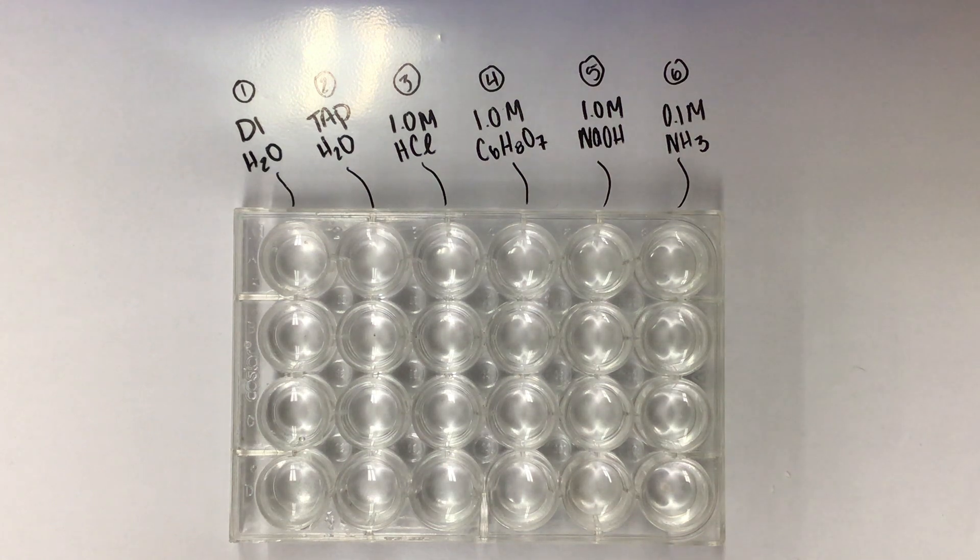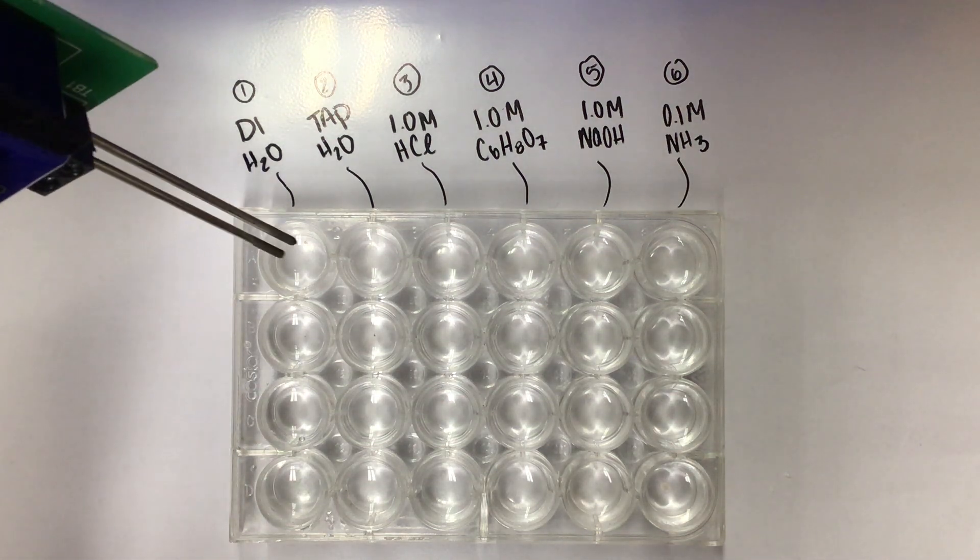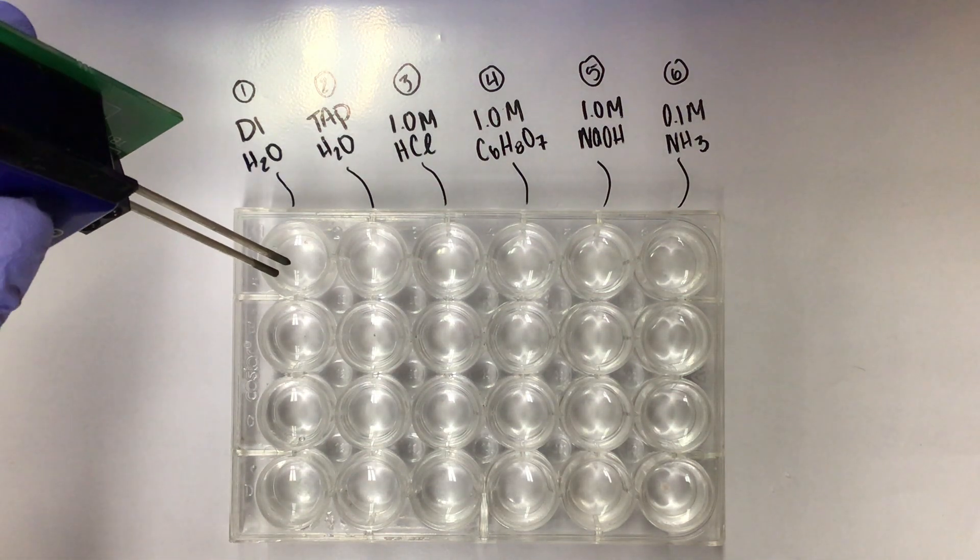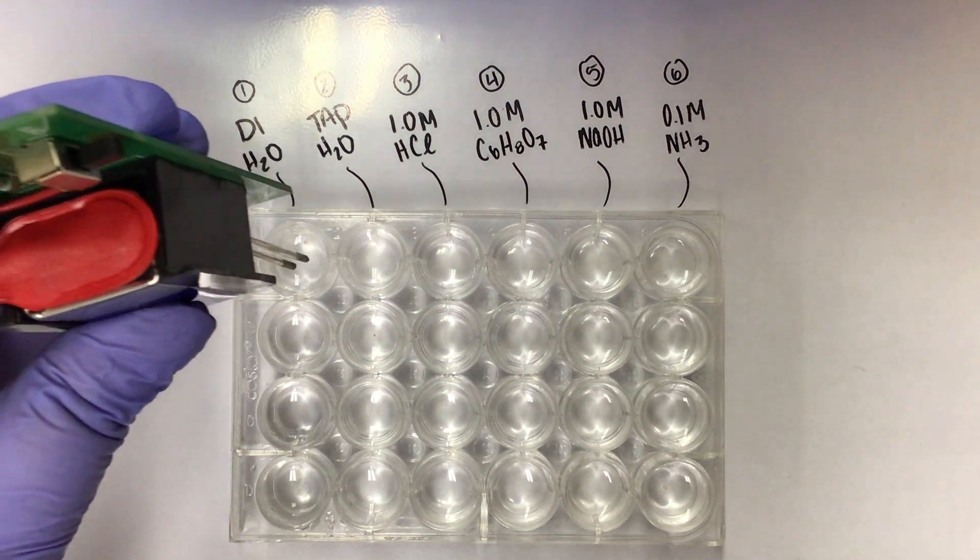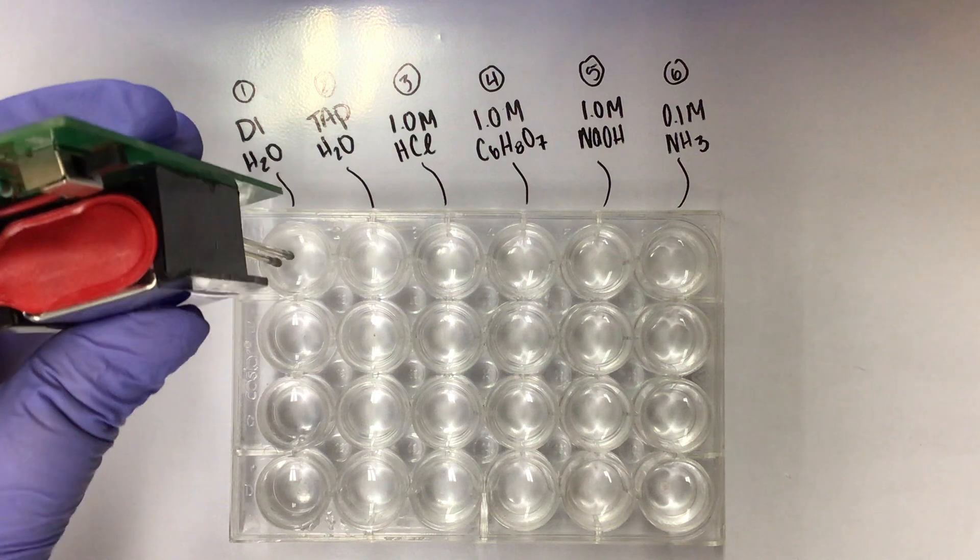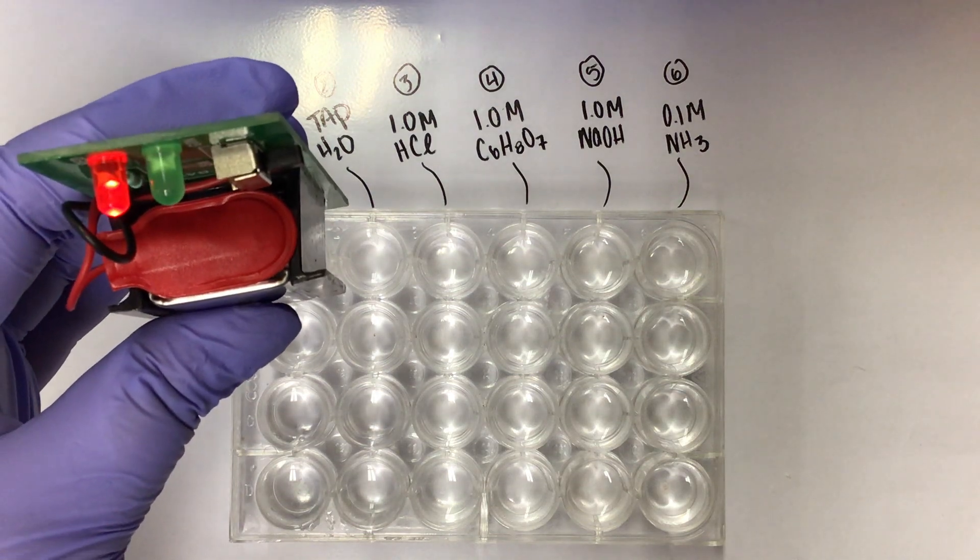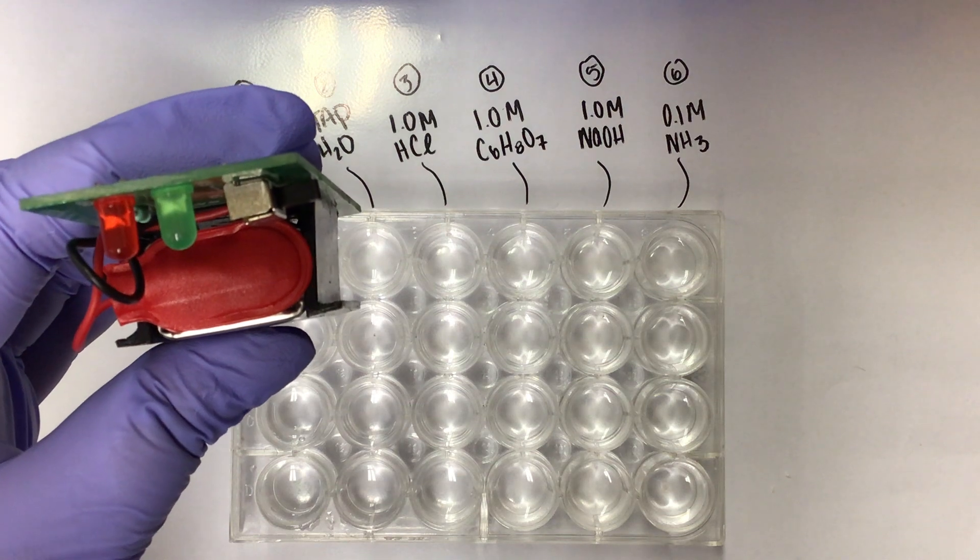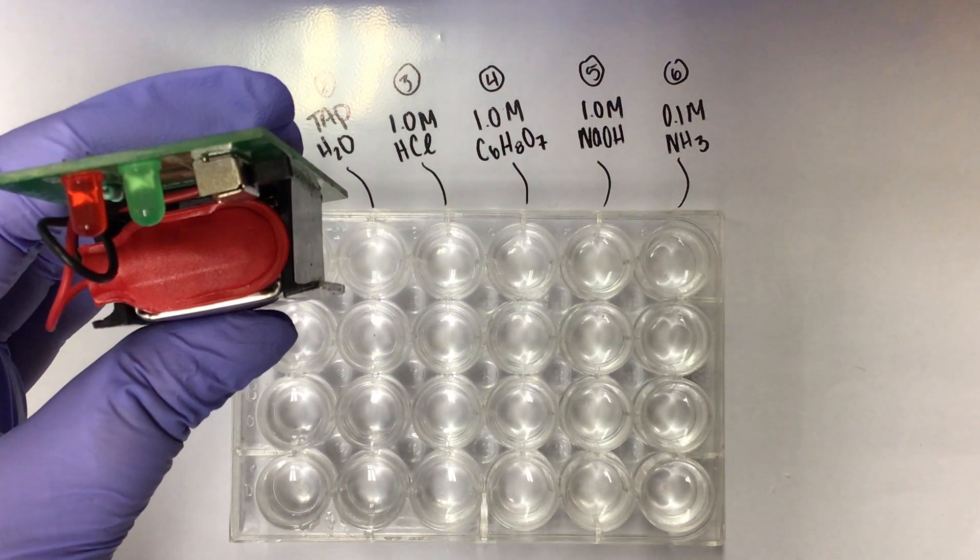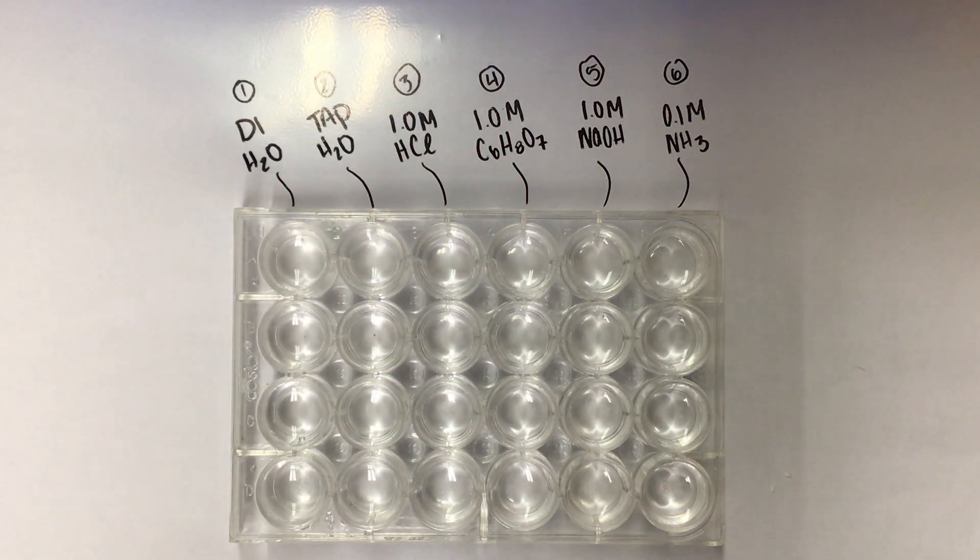Our very first test is for conductivity. I'm going to start in well one here and place the probes inside each of these, rinsing with water in between. If I put this into the DI water, the lights are not lighting up at all. This means it is not conductive.